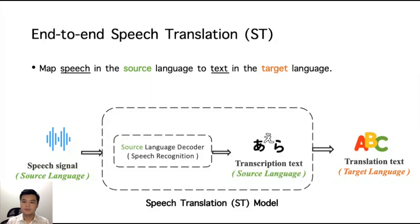One of the approaches is Multitask Learning, which learns the ST model with an additional source language decoder, or we can set it as a speech recognition module. We usually use word error rate to measure the recognition quality, and BLEU score to measure the translation quality.